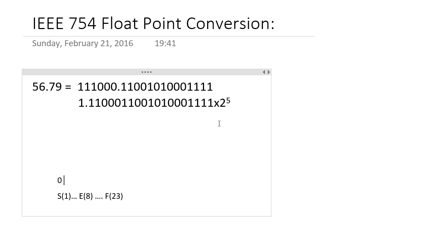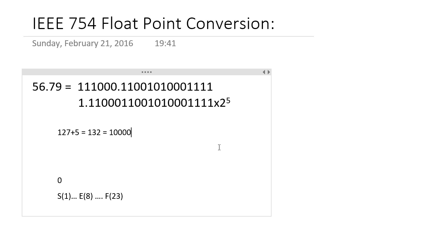For the exponent part, we need to make an 8-bit binary exponent. To do that, we take 127 and add it to whatever value we have as the exponent — which is 5 — giving us 132. Converting 132 to binary gives us 10000100, which is automatically an 8-bit number.